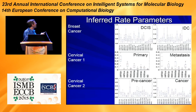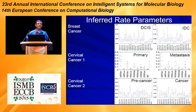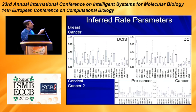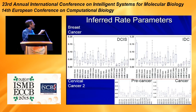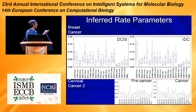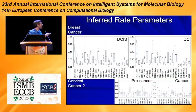We then applied that to real data sets — a breast cancer data set and a couple of different cervical cancer data sets. In each of these we have samples at two different stages of development: in breast cancer, DCIS is a pre-cancerous stage and IDC is the cancer. As a sanity check, we know some of these are oncogenes like HER2 — they should be amplified, and they do show selective gains. Some are tumor suppressors like P53 — they do show selective loss. So that's always a nice sanity check.